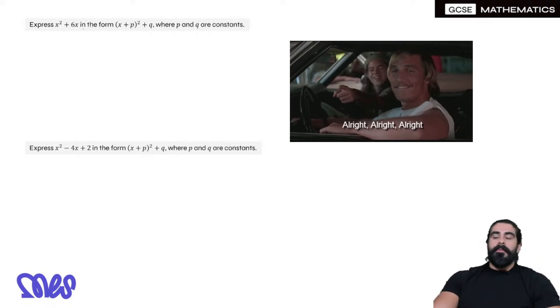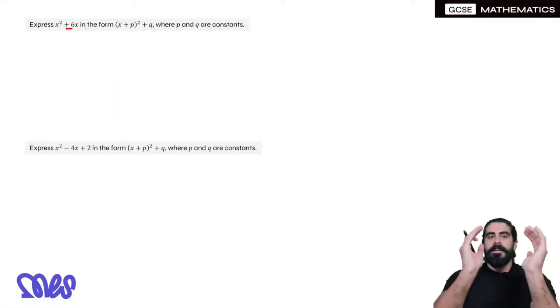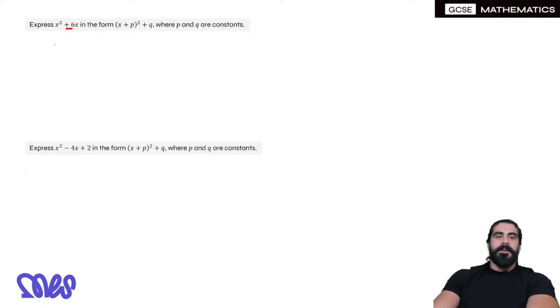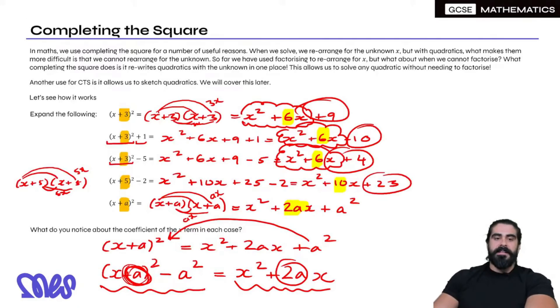Remember what we said: the coefficient of x gets halved and it gets put in a bracket squared. So we introduce a bracket and we say x, and then we half 6, that's 3. Then we close the bracket squared. That's just the beginning bit, the (x + a)².